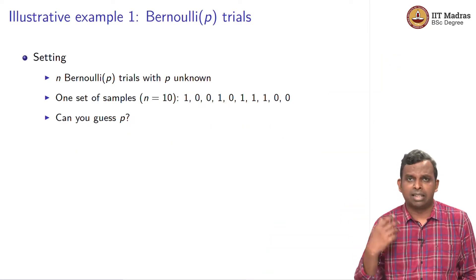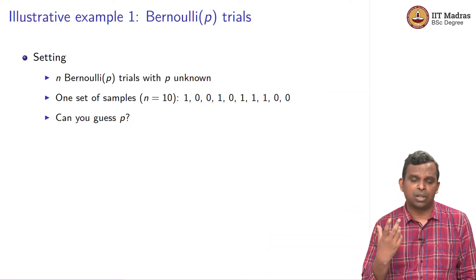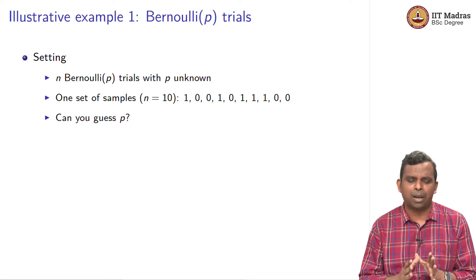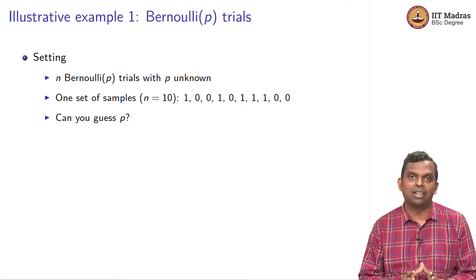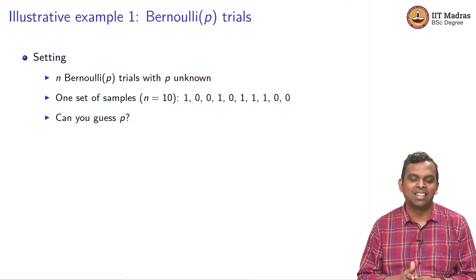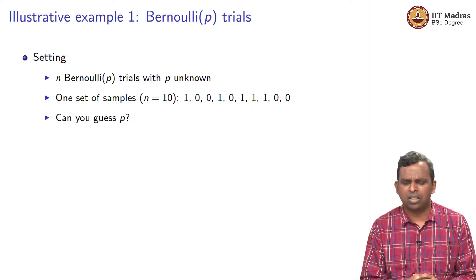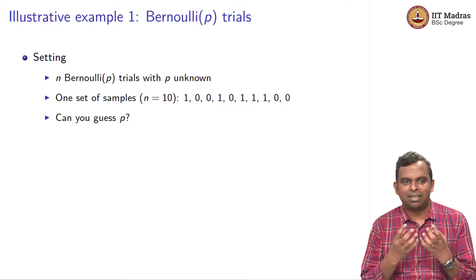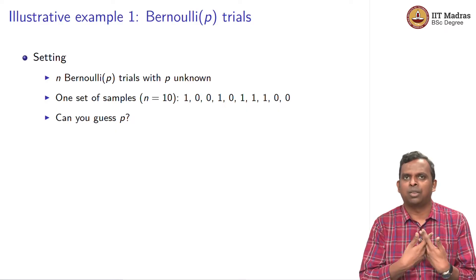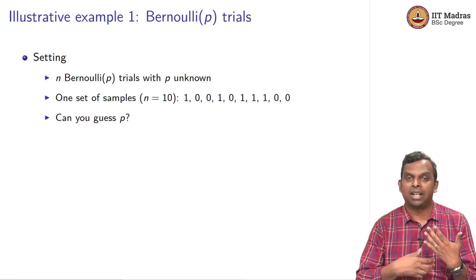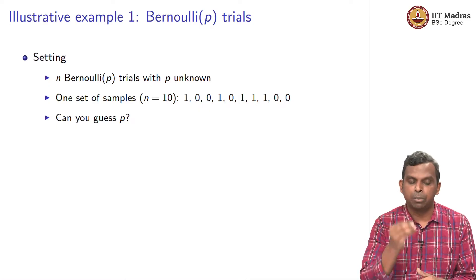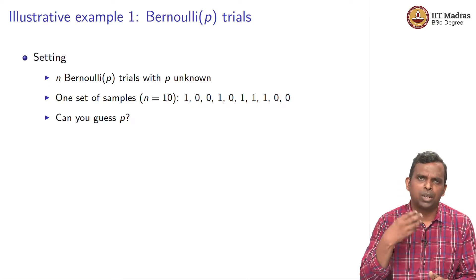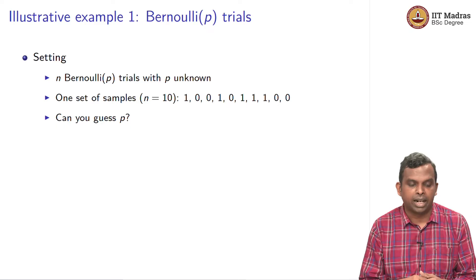Let us see a few illustrative examples. The first and very typical example, which we will use again and again to introduce new ideas, is Bernoulli-P trials. It is a very simple example but it has within it a lot of meaning, and many ideas can be explained very easily using Bernoulli trials. I will use this example over and over again to illustrate important ideas.